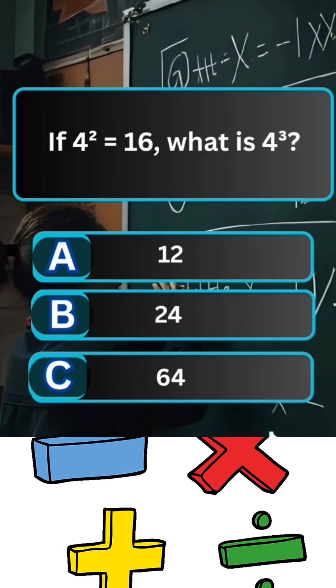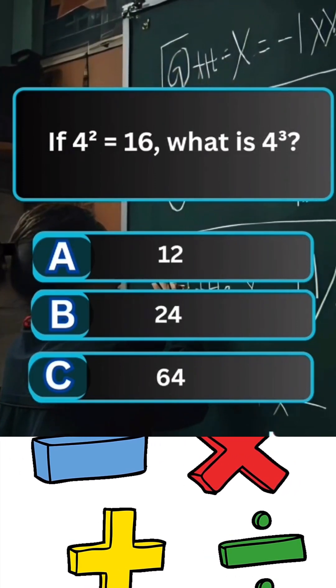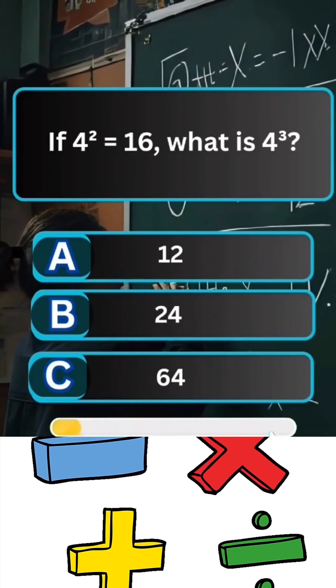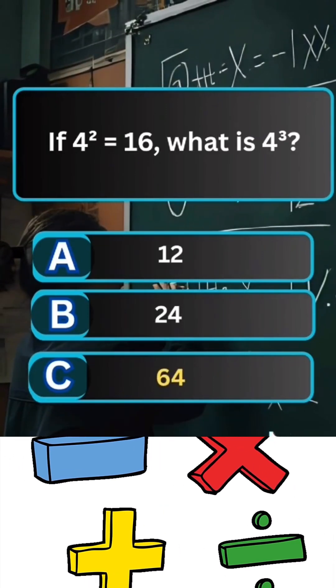Question 5. If 4 squared is equal to 16, what is 4 cubed? Answer C. 64.